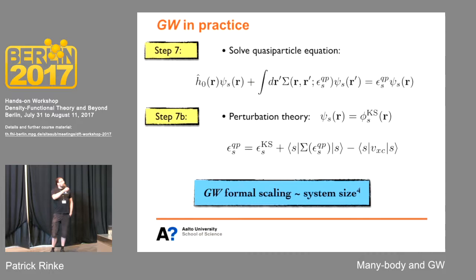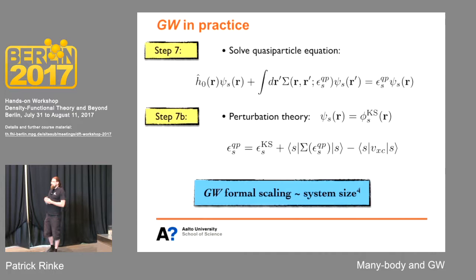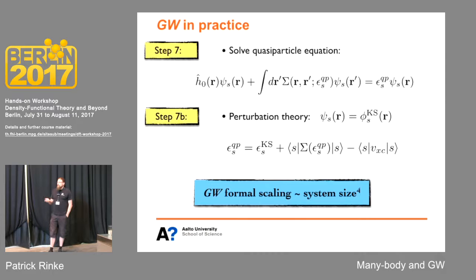Working through the theory gives a formal scaling of system size to the power of 4. If you brute-force implement this, doubling the system size gives a factor of 16 increase in computer time. This is an expensive theory, but sometimes you have to pay the price to get the right result. I'm going to show you examples where this is absolutely essential. In the tutorial, you do some calculations for smaller systems so you don't run into the scaling wall.